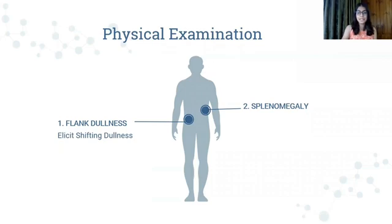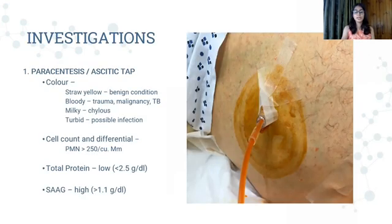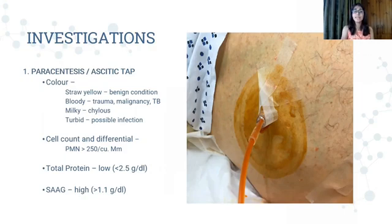Moving on to the diagnosis, beginning with physical examination. On palpation, what you will almost always see in a case of liver cirrhosis-causing ascites is splenomegaly. On percussion, you will find a dull note on the flanks in the abdominal region. You must always elicit the shifting dullness test. The first investigation to be done is a diagnostic paracentesis or ascitic tap. The color of the aspirated fluid is important: a straw-yellow color indicates benign conditions like liver cirrhosis, a bloody consistency indicates trauma, malignancy, or in rare cases tuberculosis, if it is milky it indicates chylous ascites, and if it is turbid it shows the possibility of an infection.